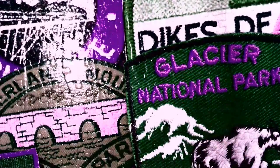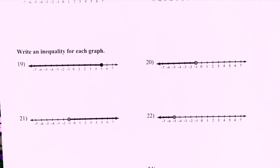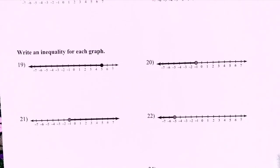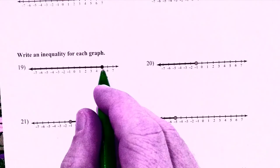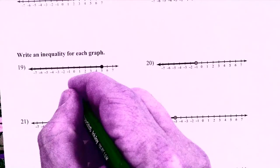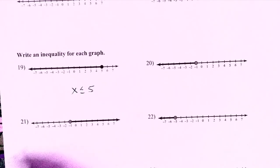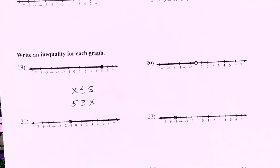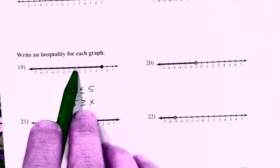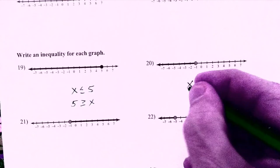There's another section on Khan that says write the inequality from a graph. You go to the graph and read it. This one shows a solid dot on five with the line going left, so these are all numbers less than or equal to five. We write that as: x is less than or equal to five. You could also write it the other way — five is greater than or equal to x — but I prefer putting the variable on the left-hand side. Next: a hollow dot on negative one with the line going left, so x is less than negative one.